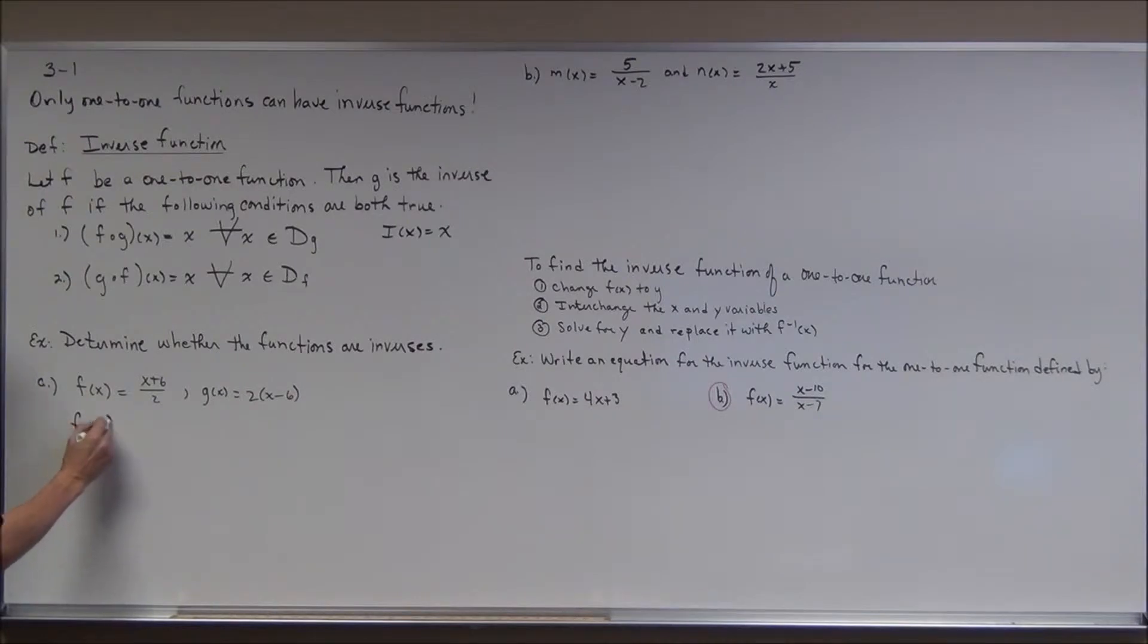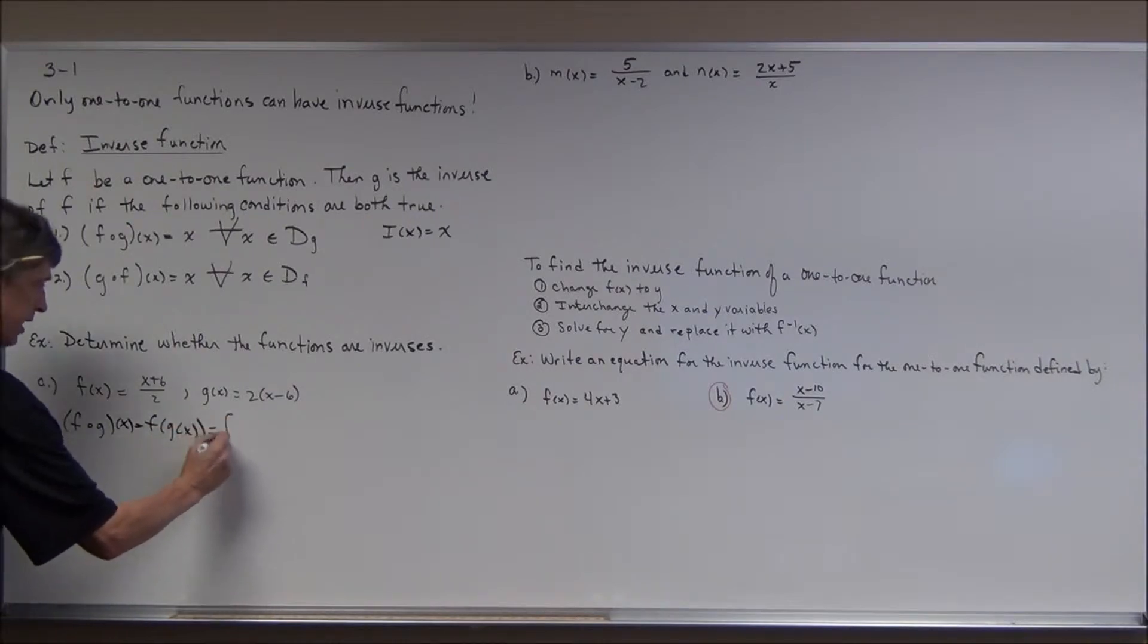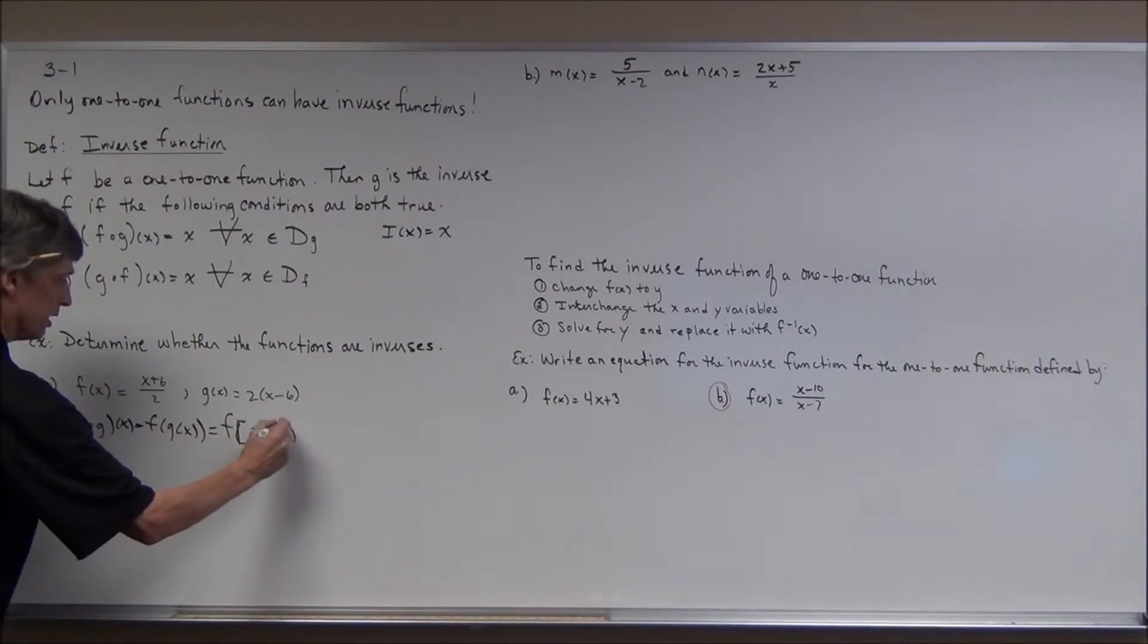I'm going to take these two functions. I'm going to compose them in both orders. So first I'm going to take f circle g of x, which is f of g of x, which is f of, now g of x is this expression here. I'll put a bracket. Two times the quantity x minus six.